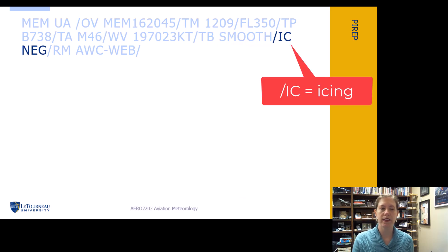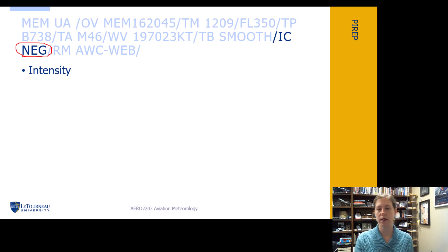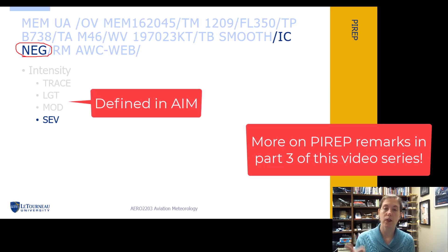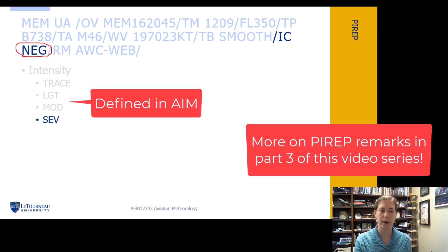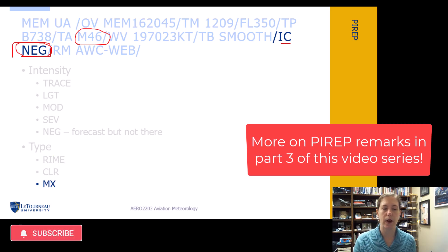Next we have icing. Remember, if we have NEG, that's important — icing was forecast but is not actually present. We have intensity levels of icing: trace, light, moderate, severe. These are again in AIM chapter seven — you can look up the table of icing intensity. You don't need to memorize it, but be aware it's there. We also include the type of icing being encountered: rime, clear, or mixed — three things you should remember from our discussion about icing.